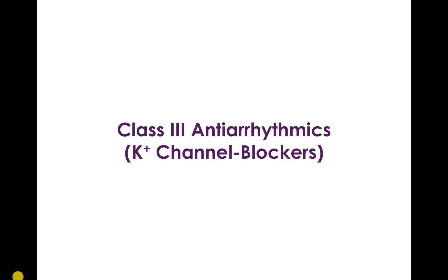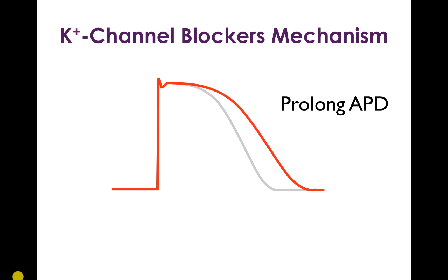Now we'll talk about class 3 antiarrhythmics, which are the potassium channel blockers. Potassium channel blockers work by prolonging the action potential duration. Recall that phase 3 of the action potential is mediated by the potassium channels, so when you block potassium channels you block phase 3 and it takes longer for the cell to repolarize.